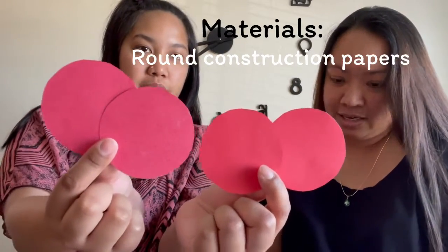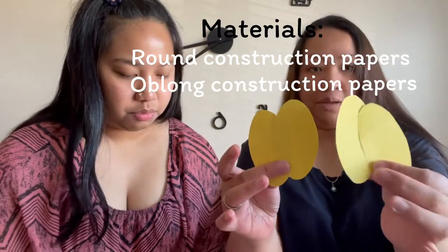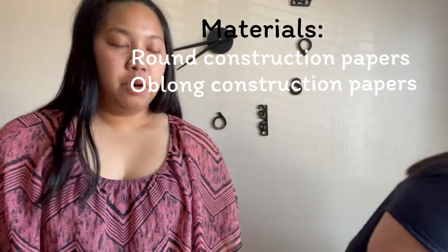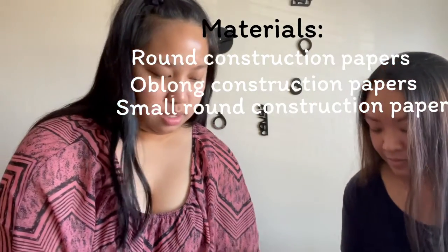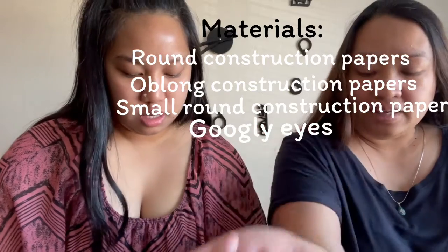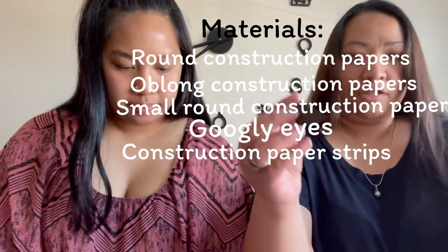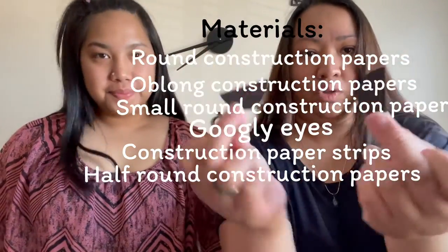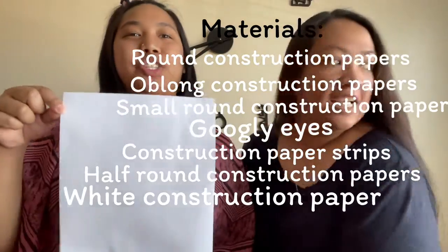In your paper bags, we are going to be finding these materials. We're going to have 4 circle cutouts, red cutouts and layers. 4 yellow oblong-shaped construction papers. We're also going to find 12 pieces of circle cutouts, color black. You'll also find 4 googly eyes, strips, and 2 of these half-moon shapes. And last but not the least, your base would be one white construction paper.